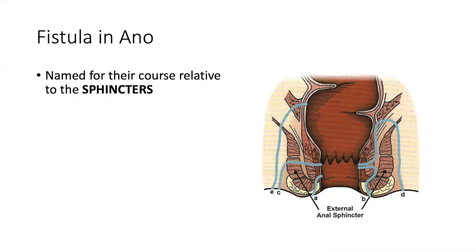The key distinction: abscesses are named for their relation to spaces; fistulae are named for their relation to sphincters. That frequently gets confused — you'll ask someone a type of abscess and they'll tell you a fistula type. Looking at this diagram, the fistulae are labeled A through E. Starting with A — submucosal or superficial or perianal. B — intersphincteric. C — trans-sphincteric. D — suprasphincteric.